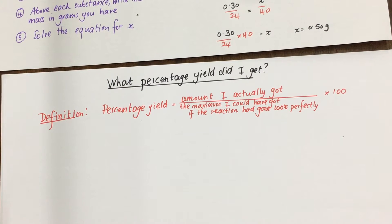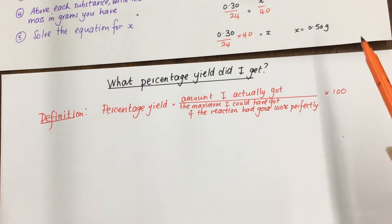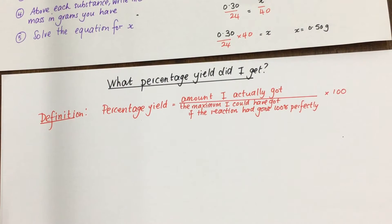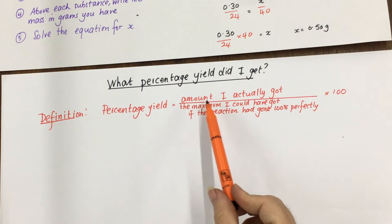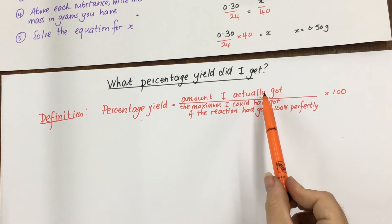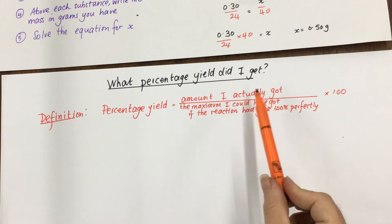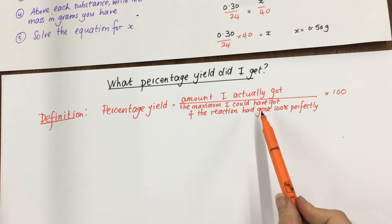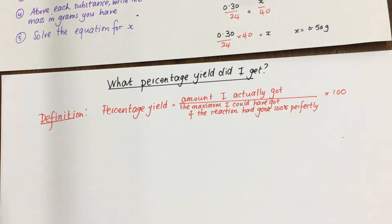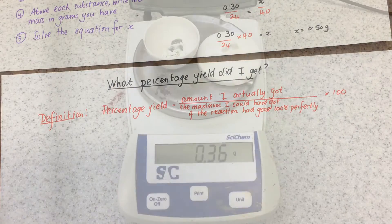Now that we've worked out the maximum amount of magnesium oxide I could have got, which is 0.50 grams, we're going to work out what percentage yield I did get. We work out the percentage yield by dividing the amount I actually got from the reaction by the maximum amount I could have got if the reaction had gone 100% perfectly. So we now need to go and weigh the magnesium oxide.